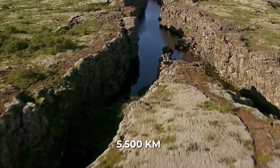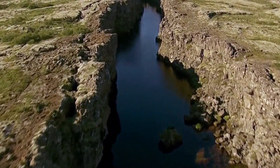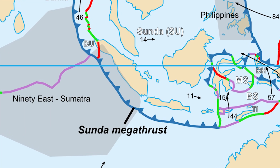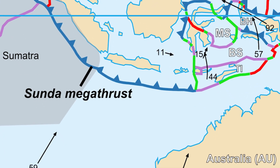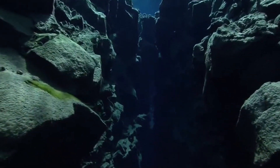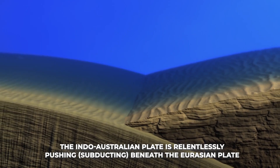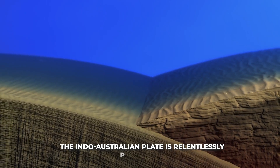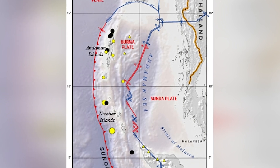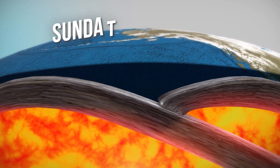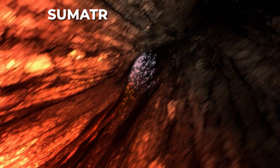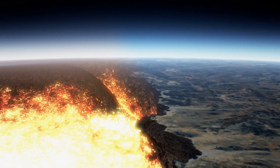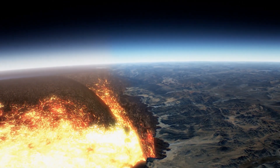This fault stretches roughly 5,500 kilometers, about 3,300 miles, from the coast of Myanmar in the north, down along the western side of Sumatra, Indonesia, curving south of Java and Bali and ending near Australia. It's an enormous crack in the Earth's crust, hidden under the sea, where the Indo-Australian Plate is relentlessly pushing, subducting, beneath the Eurasian Plate — specifically the Sunda and Burma microplates in Southeast Asia. This subduction zone is marked on the sea floor by the Sunda Trench, a deep underwater trench off Sumatra and Java, forming a megathrust fault — essentially a giant gently sloping thrust fault that marks the plate interface.